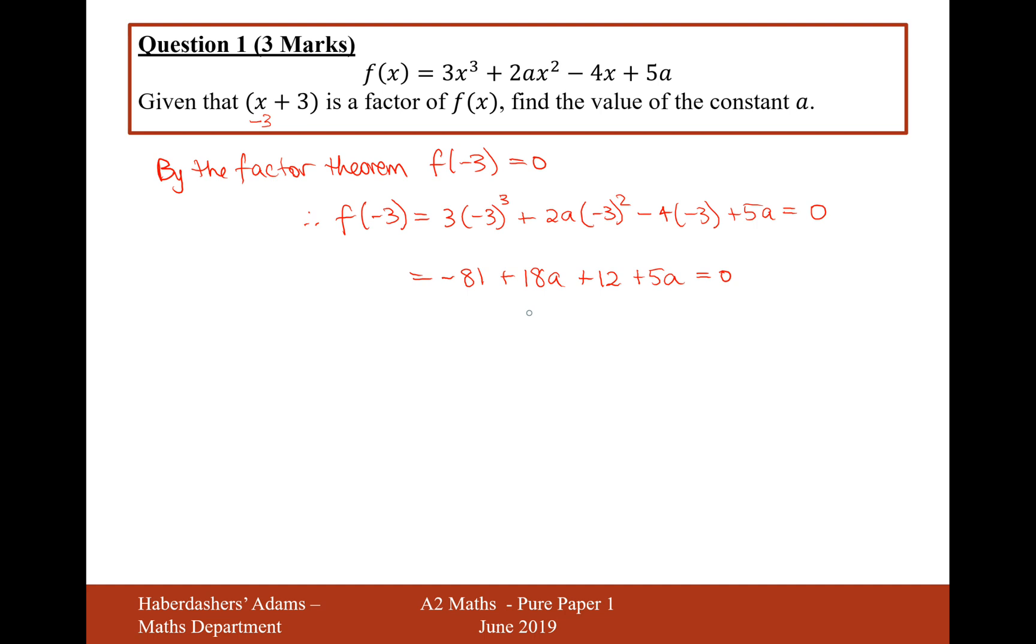The a terms give us 23a, and then if we move the 81 and the 12 to the other side, that will be 81 minus 12, which equals 69. Then if we divide through by 23, we get a equals 3.